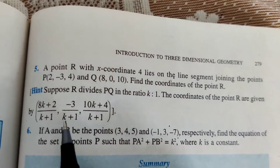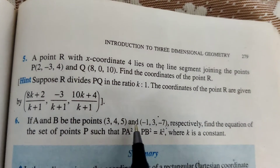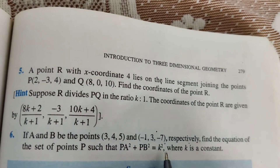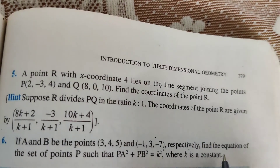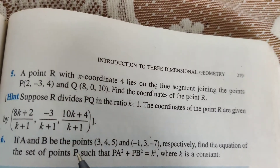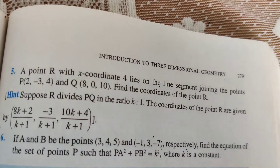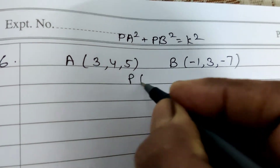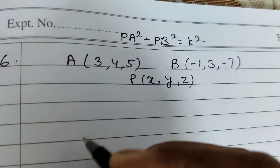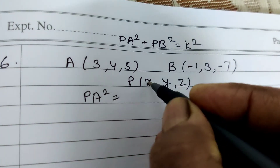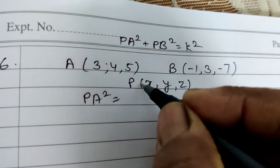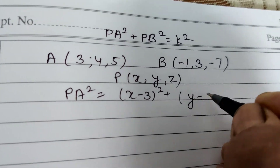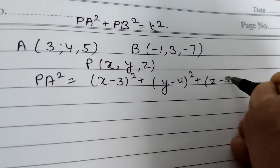Question number 6: If A and B are points (3, 4, 5) and (-1, 3, -7) respectively, find the equation of the set of points P such that PA² + PB² = k², where k is a constant. Let P have coordinates (x, y, z). PA² = (x-3)² + (y-4)² + (z-5)².